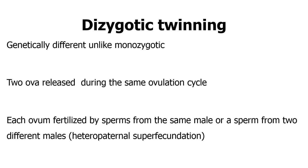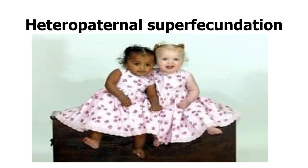In dizygotic twinning, the twins are genetically different. Two ova are released during the same ovulation cycle, and each ovum is fertilized by a sperm — either from the same male or from two different males. During the same fertility window, a woman can have intercourse with two different males, having each ovum fertilized by sperm from different fathers. We call this heteropaternal superfecundation. This became famous in 2015 in the US when a woman gave birth to two racially different children — one Black and one White — and DNA testing confirmed they had two different fathers.